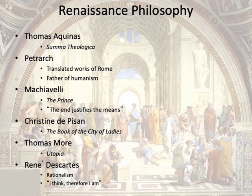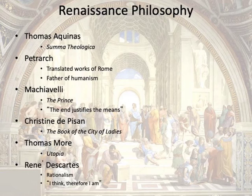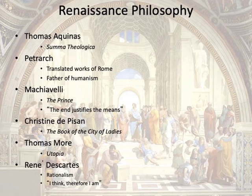Another significant thinker in this period was Thomas More, a lawyer and a scholar. His most famous work, Utopia, laid out his vision of the structure of a perfect society. The work created controversy due to its promotion of values seemingly at odds with a devout Catholic like More himself — divorce, communism, religious tolerance, and female priests. Later, King Henry VIII would seek to split the English Church from the Catholic Church because the Pope refused to annul his marriage. More, a devout Catholic, resisted the king's plans so much that Henry had him imprisoned and eventually executed.